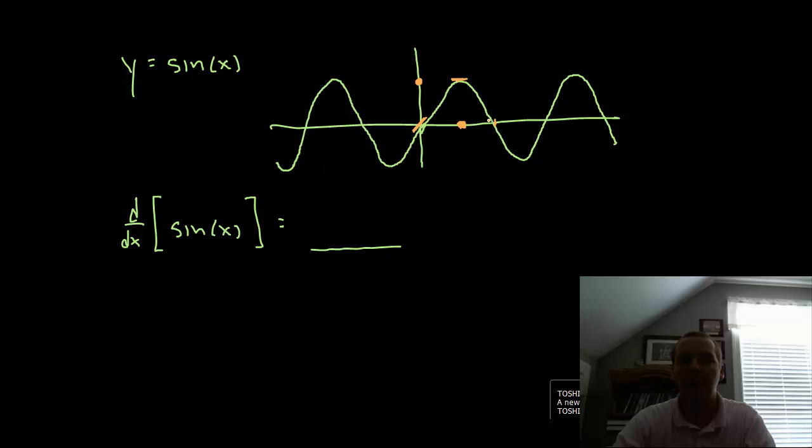At here at pi, sine of pi is 0 again, but the slope is negative 1. So I'll plot the y value of negative 1. At 3 pi over 2, we have a slope of 0 again, and then at 2 pi, we're back to having a slope of 1 again. So if I play connect the dots, it'll look something like this.